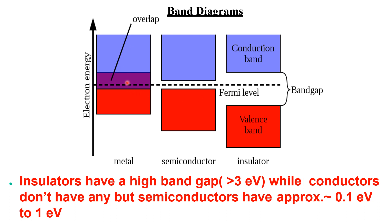This is the band diagram for metals or conductors, this is for semiconductors, and this is for insulators. In the conduction band there are electrons; in the valence band holes are there, and electrons can go from valence band to conduction band. Insulators have a very high band gap greater than 3 electron volts. In conductors the conduction band and valence band overlap. In semiconductors the band gap is small, ranging from about 0.01 to 1 electron volt.